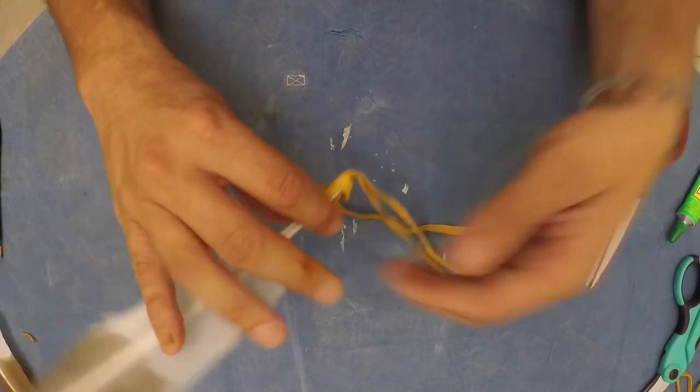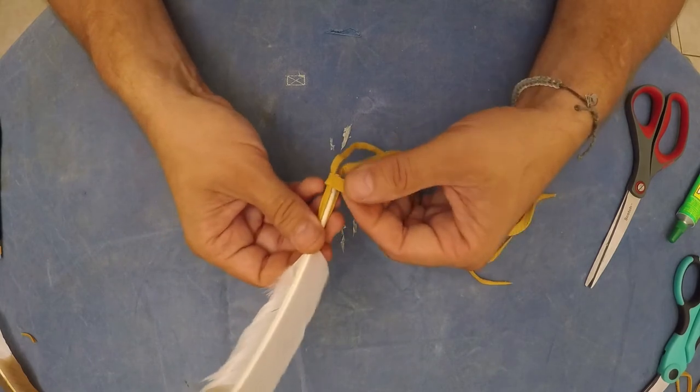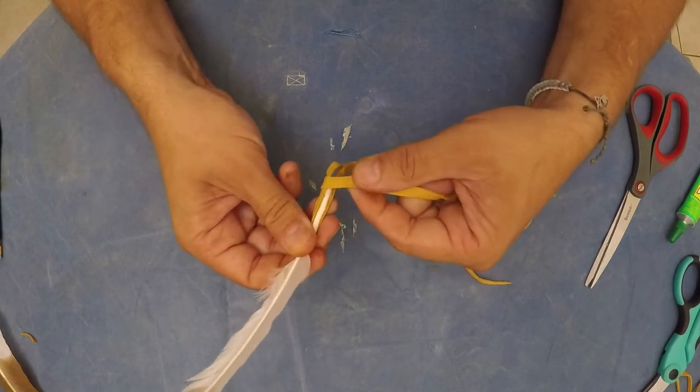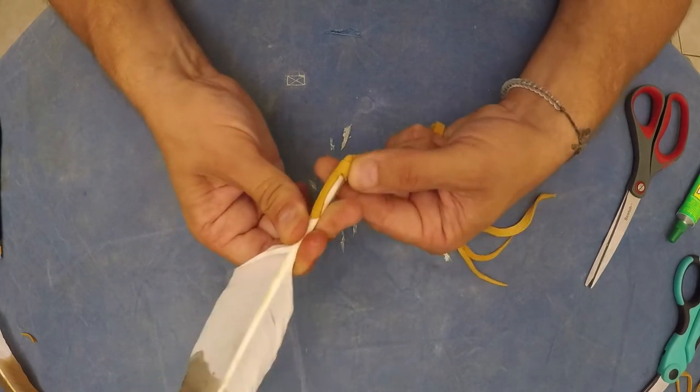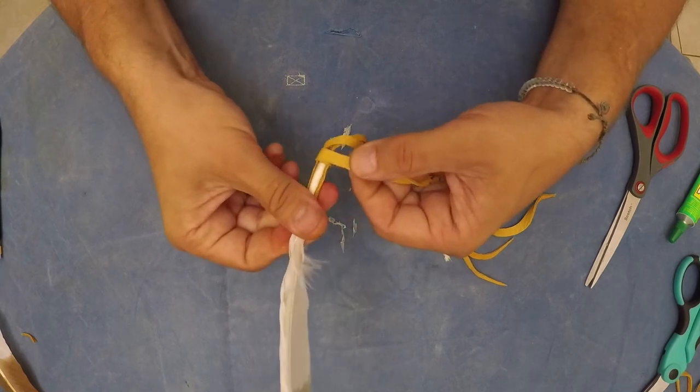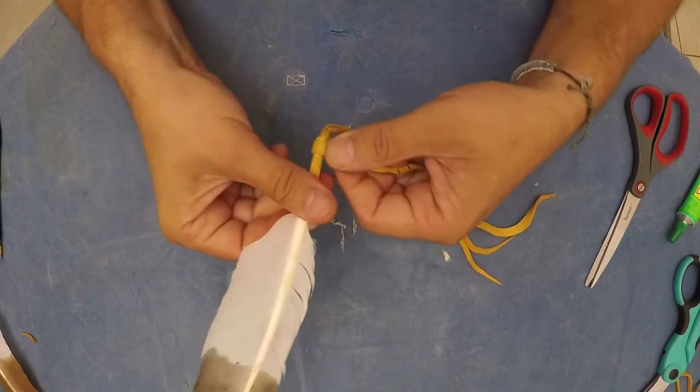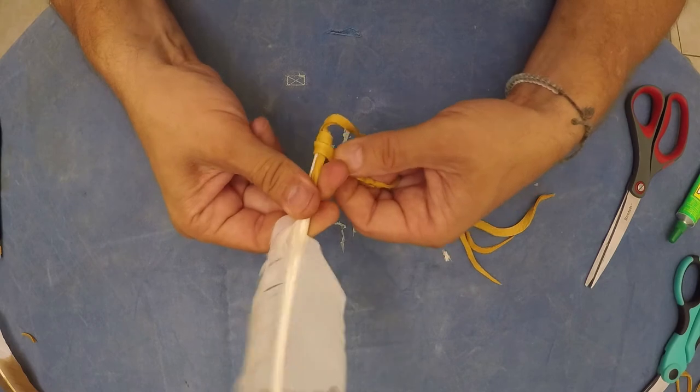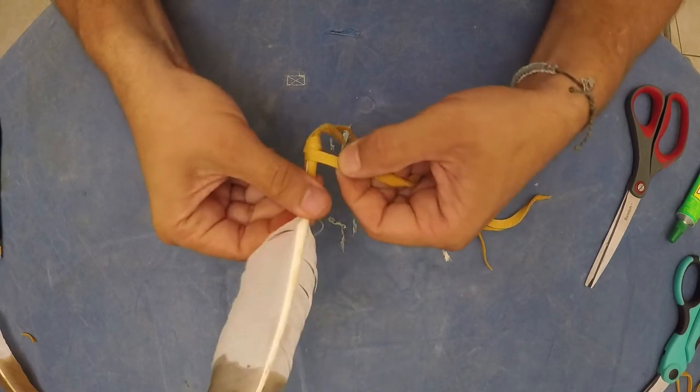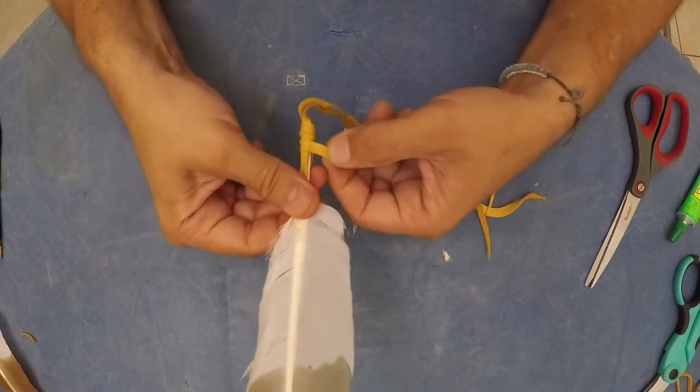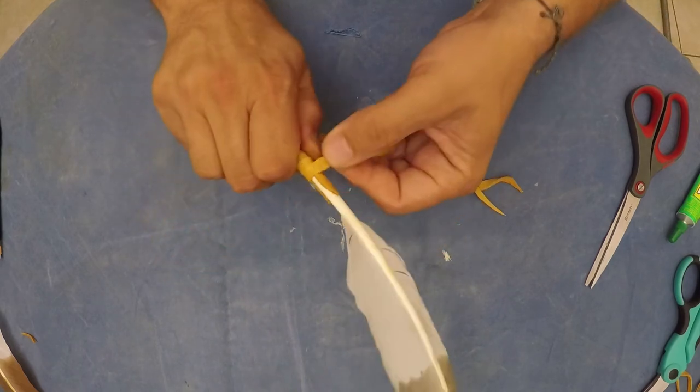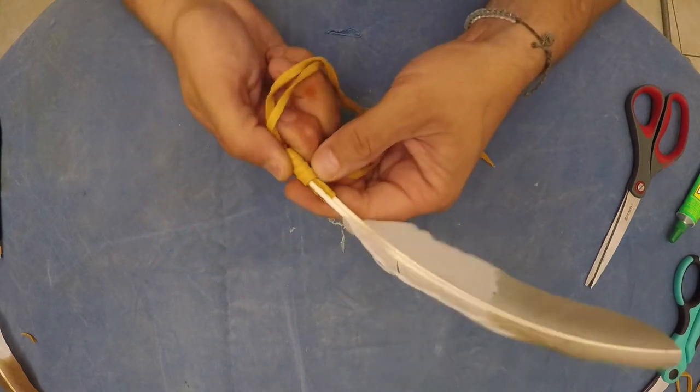Once the glue has dried, you can start wrapping the leather around the quill of the feather. Be sure to slightly overlap the leather as you are wrapping so that there are no gaps. Continue wrapping the leather around the quill until you have reached the bottom of the fletching.